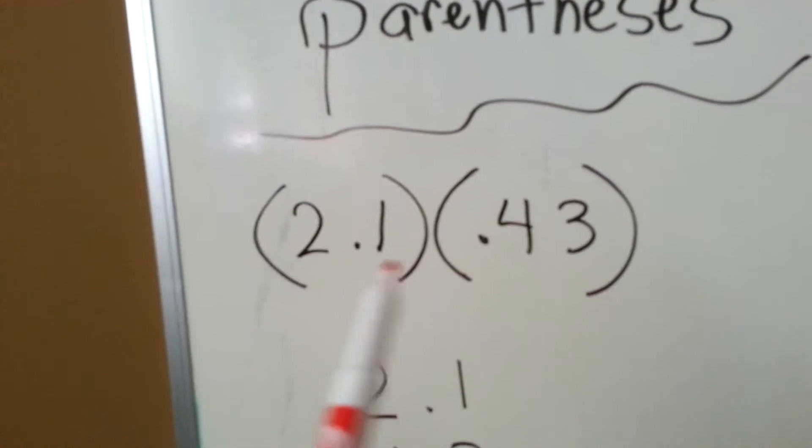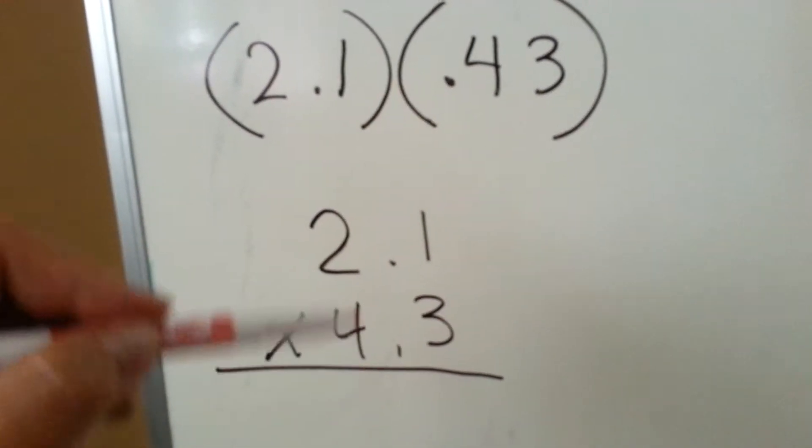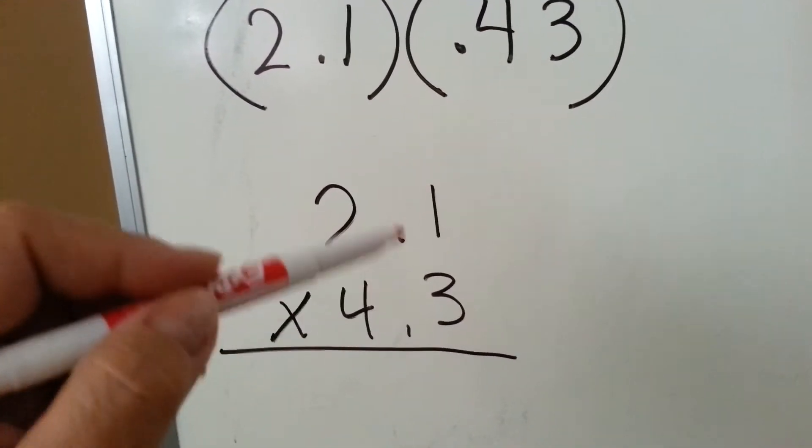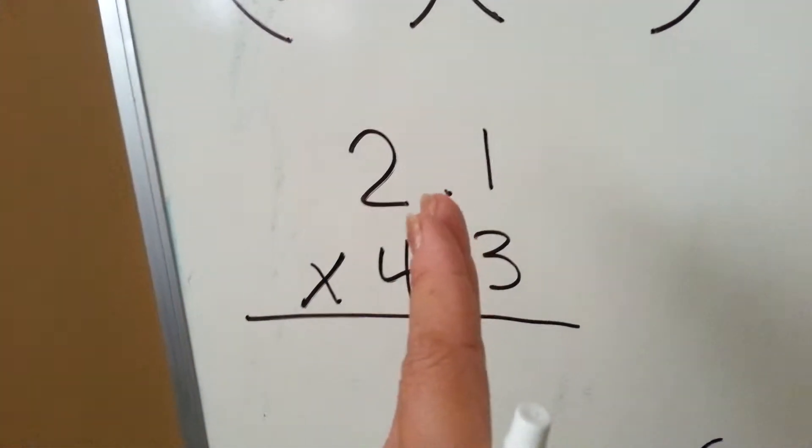So for 2.1 times 4.3, to make it easier, we would take it out of sentence form and stack them with decimal points lining up. Then we would multiply them as if there were no decimal point.